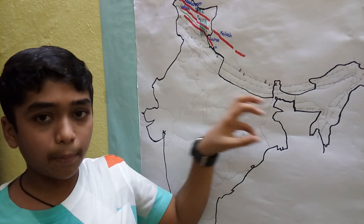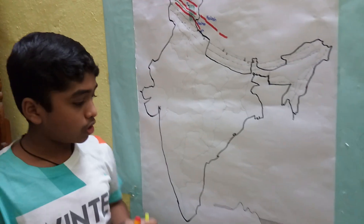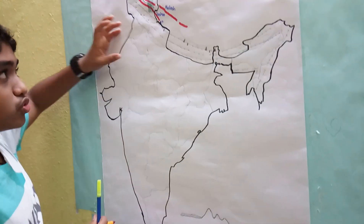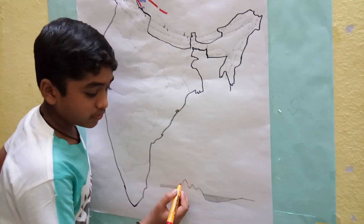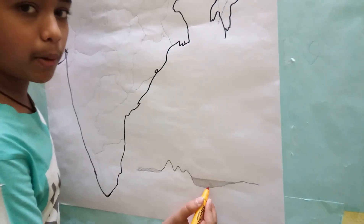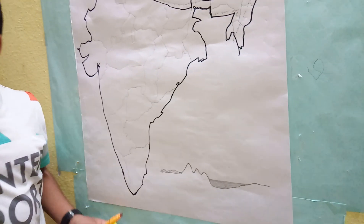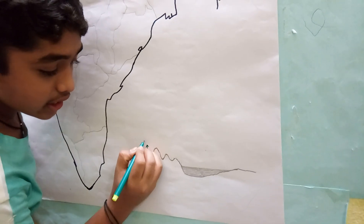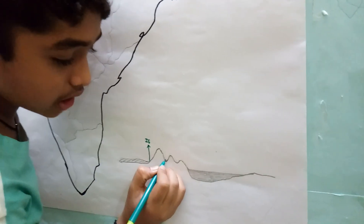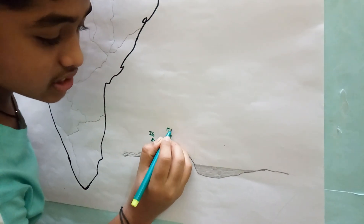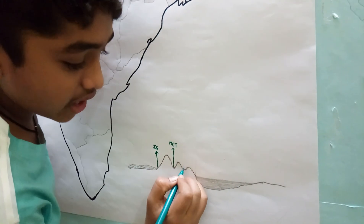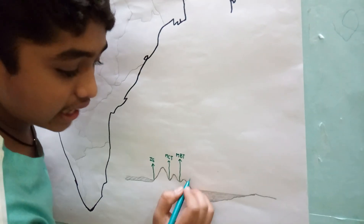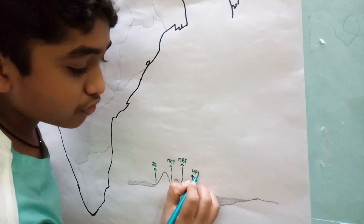These ranges are separated by major faults. Between Tibet and Himadri, we find the Indus Suture. Between Himadri and Himachal, we find the Main Central Thrust. Between Himachal and Shivalik, we find the Main Border Thrust. And between Shivalik and the Ganga-Brahmaputra plains, we find the Himalayan Front Fault.